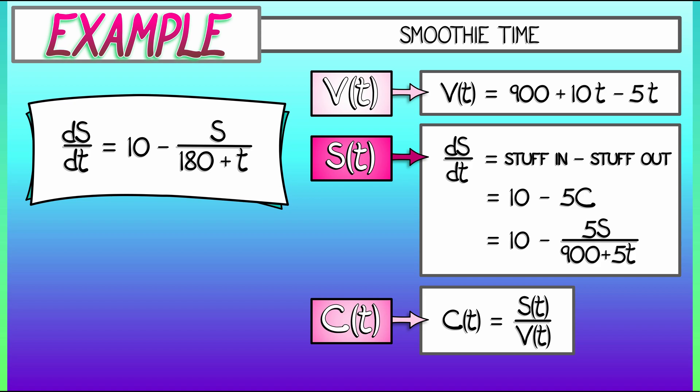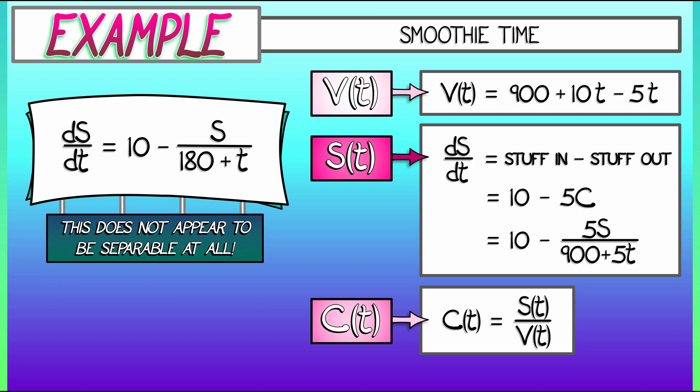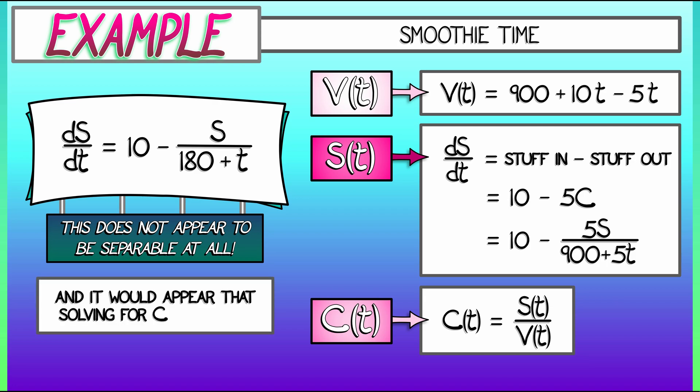I don't know how to. This is not autonomous. It's got a t in there. And it's not separable. If I multiply through by dt, I can't divide by S, rearrange the terms. It does not work. Well, maybe we could write down a differential equation for dC/dt. Oh no. That's going to be even worse. What are we going to do?